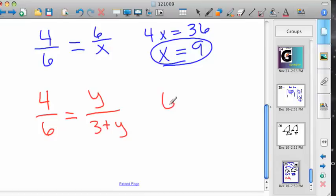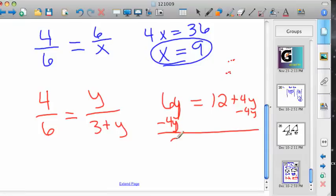So 6y, again my board's got to catch up here, 6y equals 12 plus 4y. Minus the 4y, so 2y equals 12. Yeah, you're right, y equals 6.